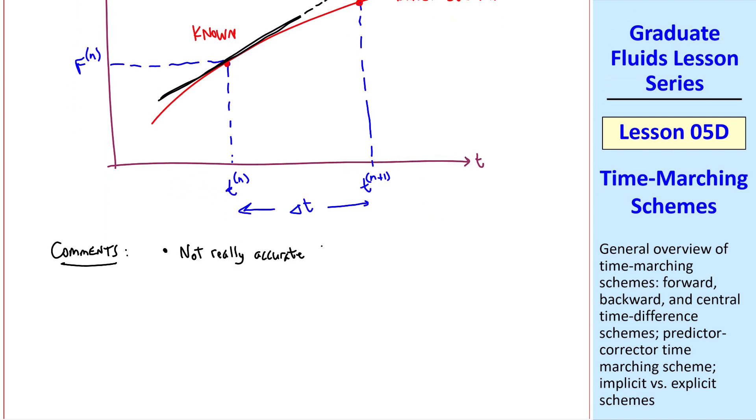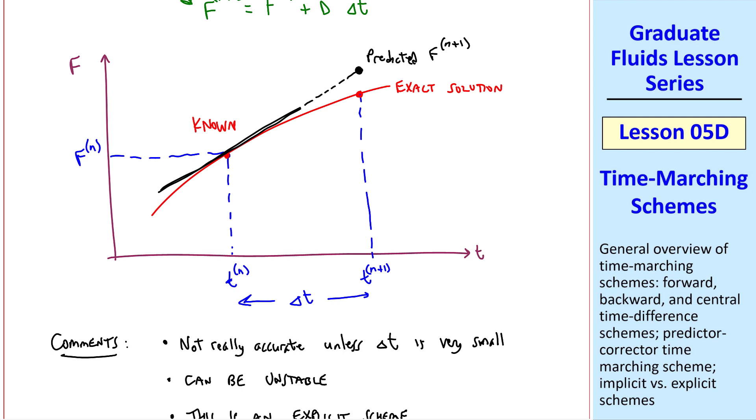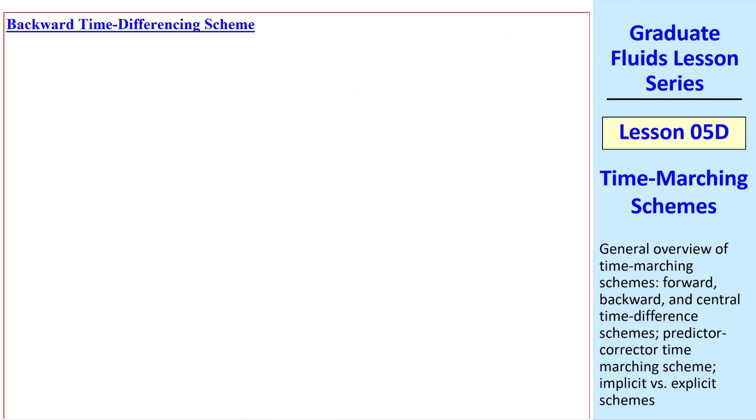Some comments. As I said, it's not real accurate unless delta t is very small. In fact, it can be unstable. This is an explicit scheme where we get our prediction from everything that's known at this time step. No kind of iteration is required. Finally, it's first order accurate as we march in time. Note that with all these schemes, once we predict f here, and then we want to march to the next time step, we're starting with the wrong answer in the first place. So the errors will accumulate.